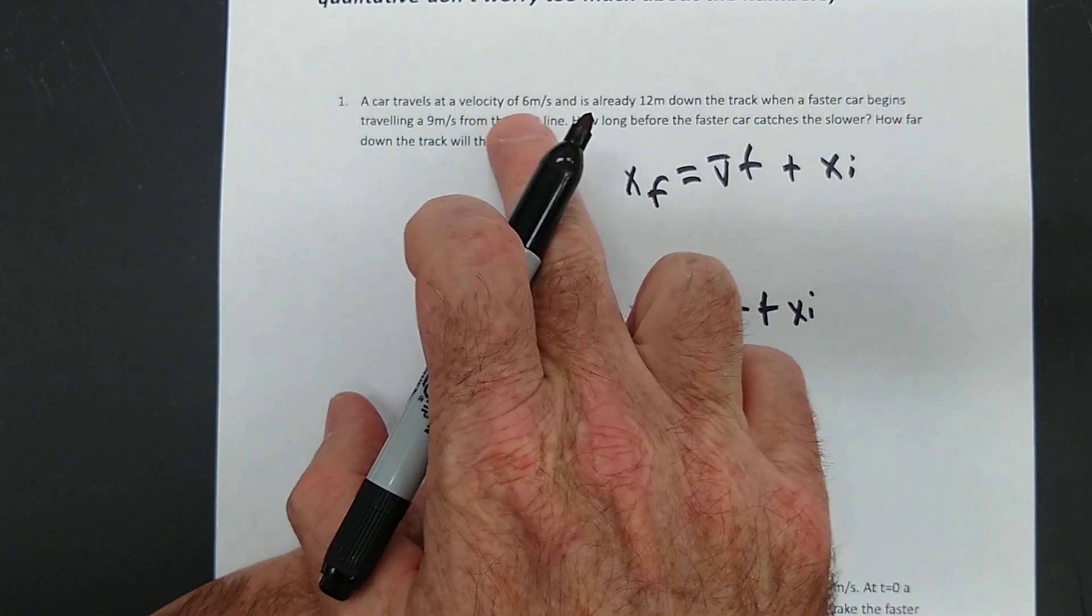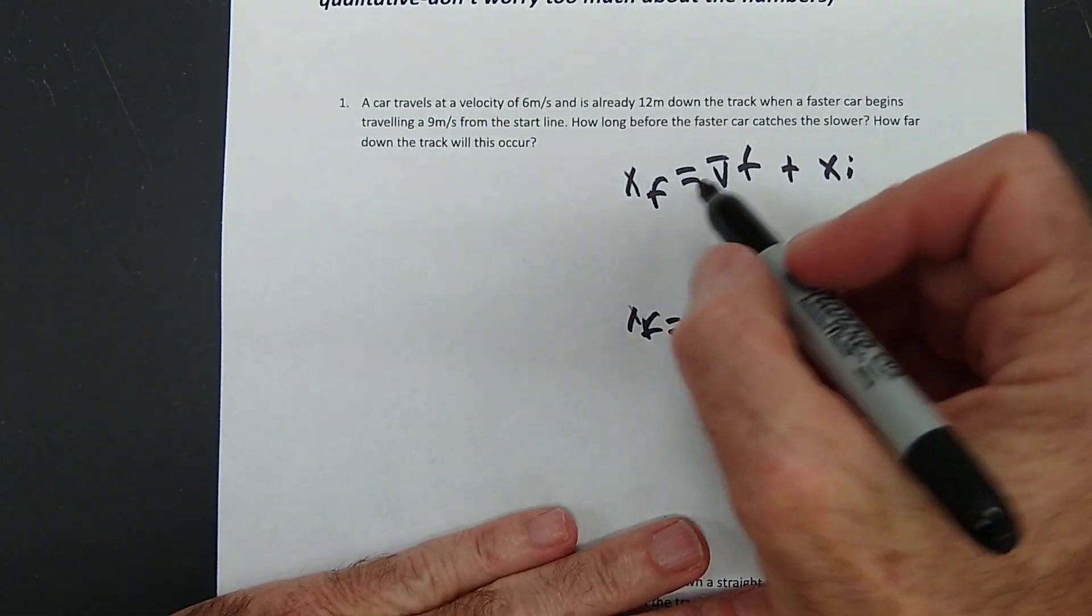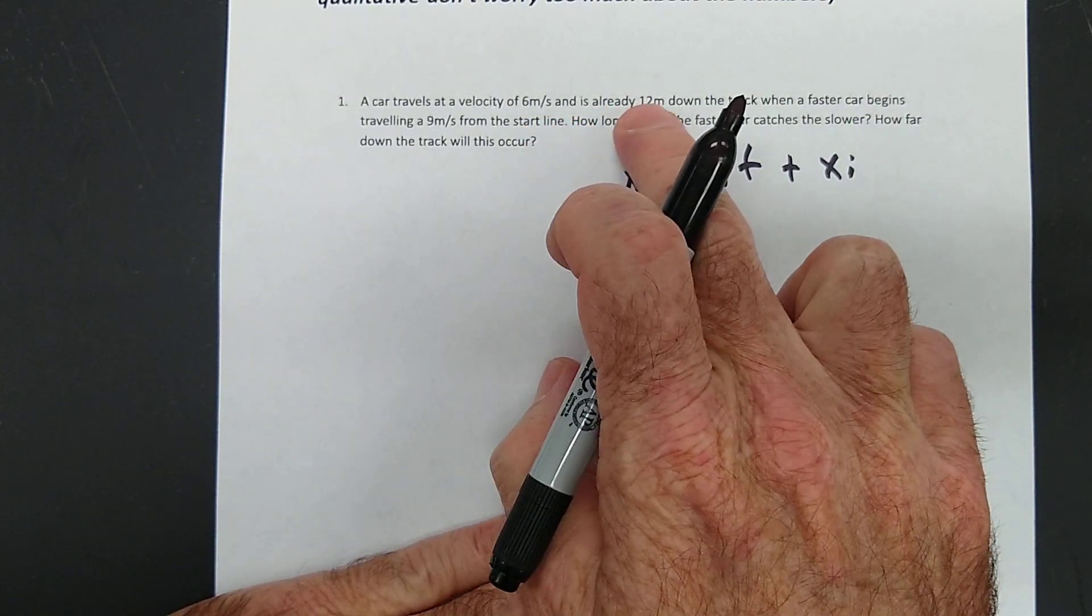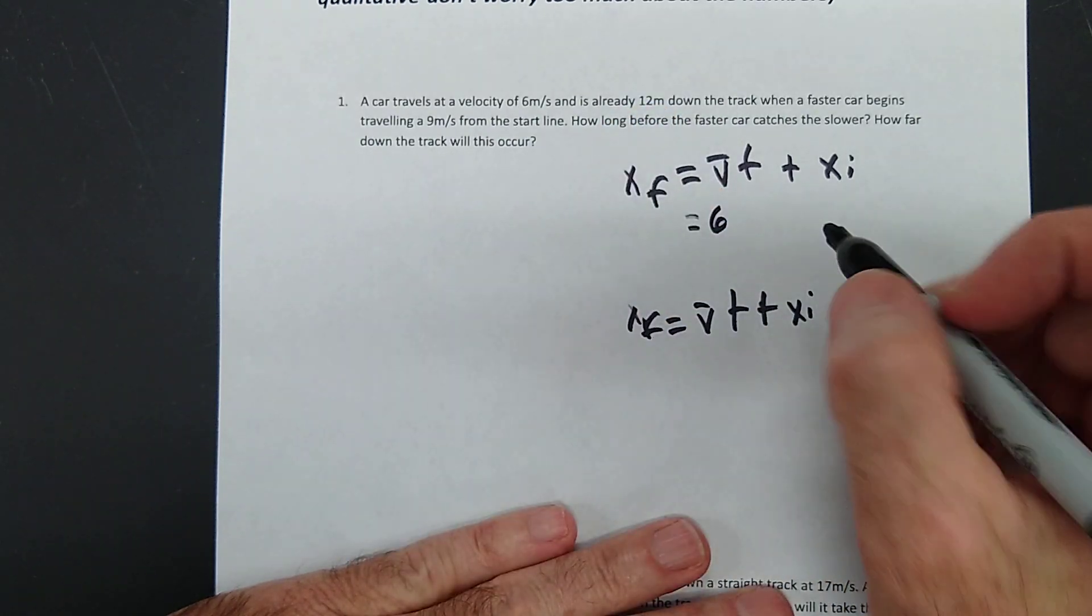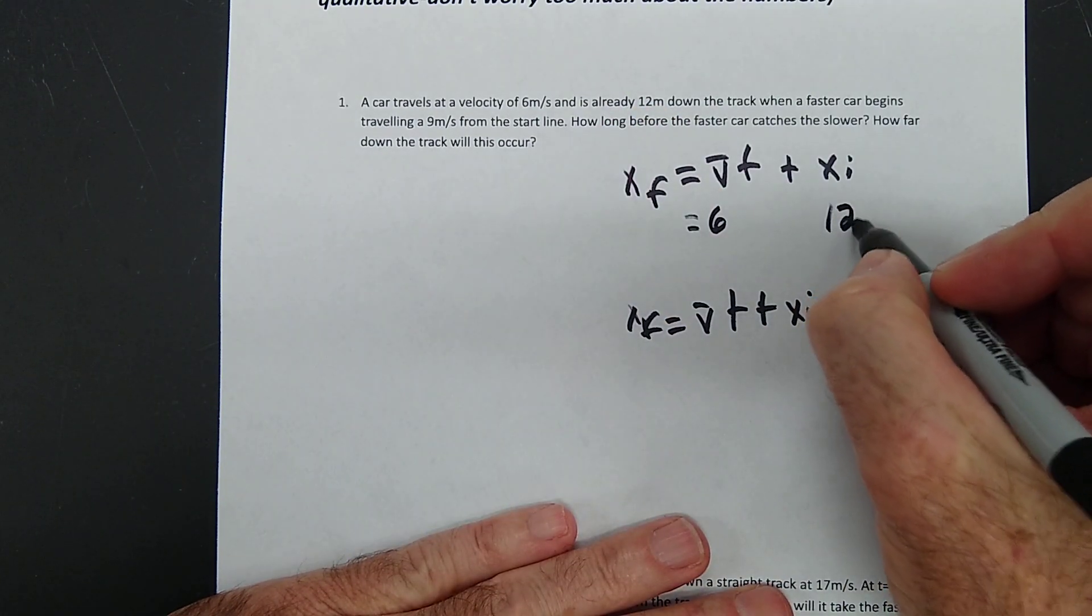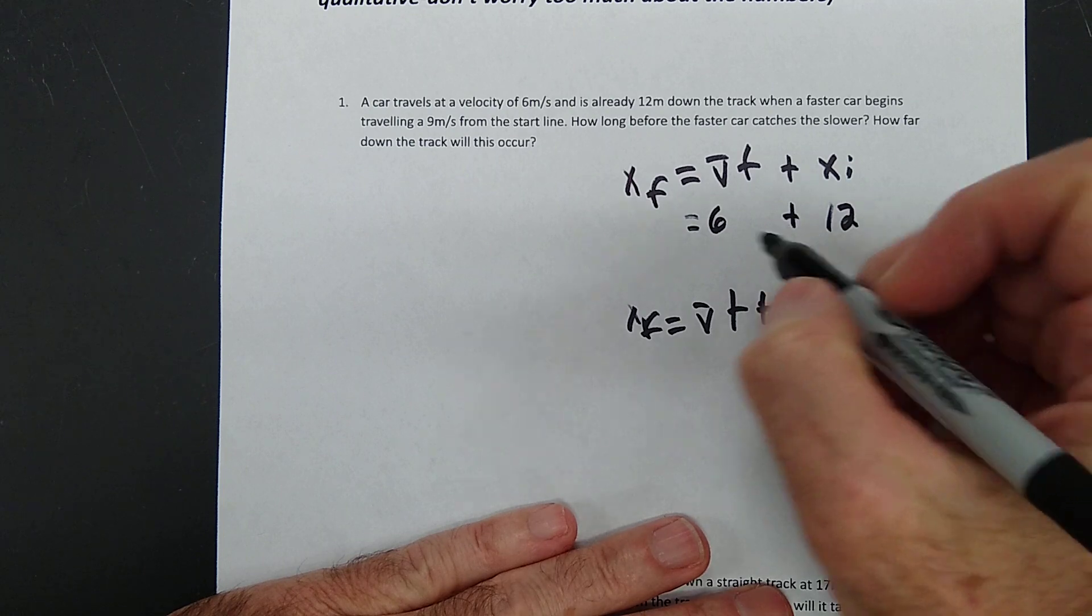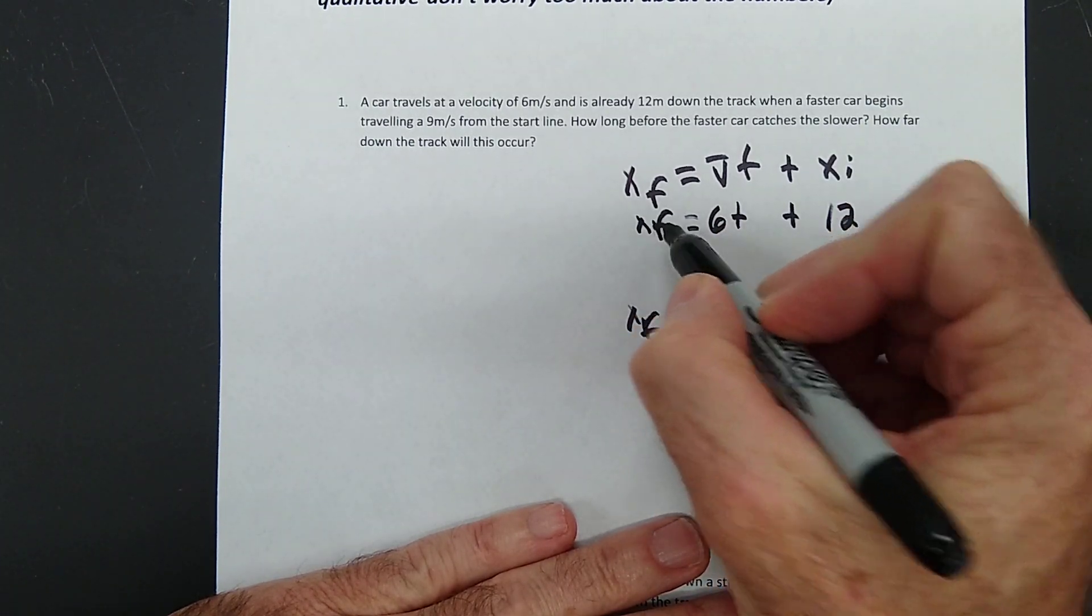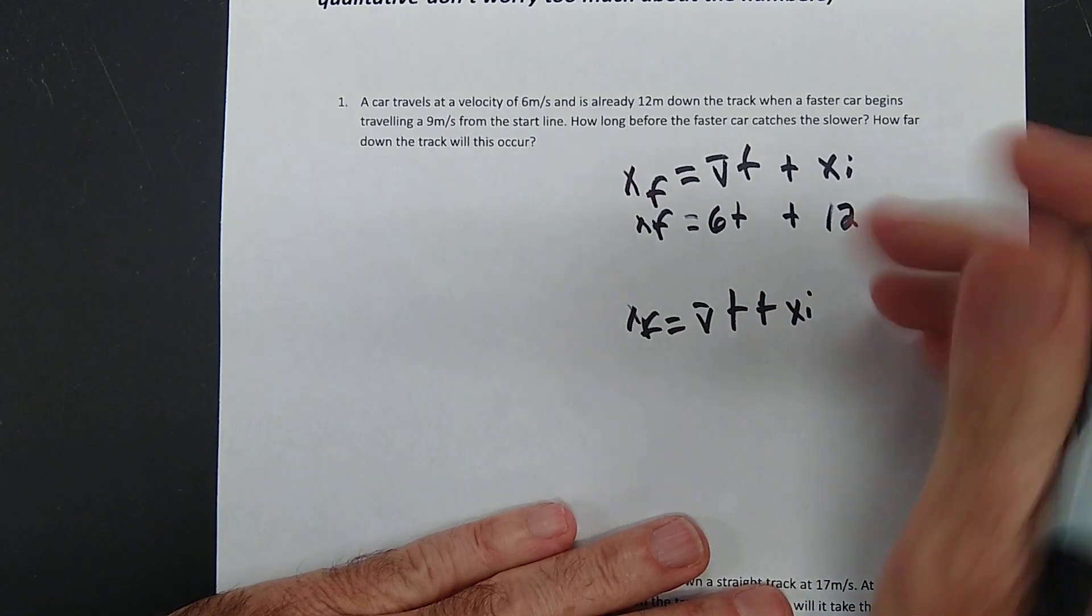A car travels at a velocity of 6 meters per second. So 6 is the V for that car. And is already 12 meters down the track. It's already 12 meters initial distance. So the first car is going to be 6T plus 12.